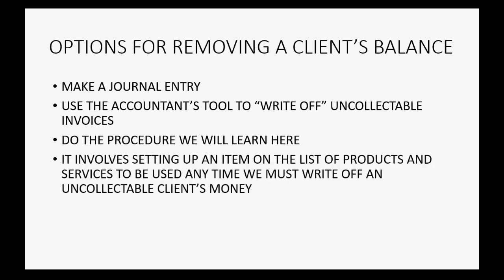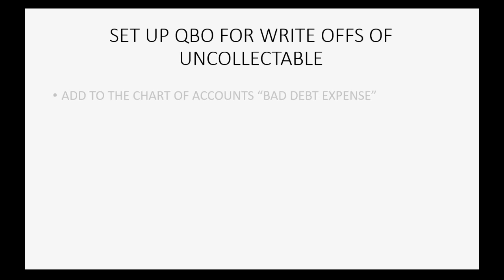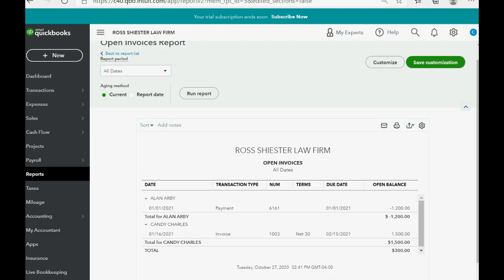It involves setting up an item on the list of products and services to be used anytime we must write off an uncollectible client's money. To set up for the procedure that an attorney would use in QuickBooks Online, first you have to add to the chart of accounts an expense called bad debt expense. So let's do that now.